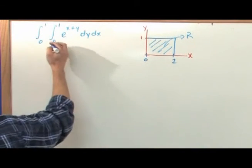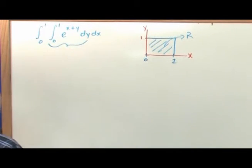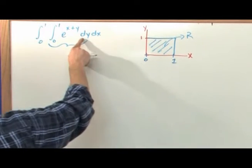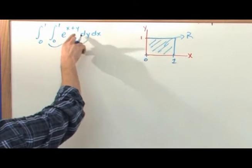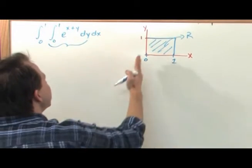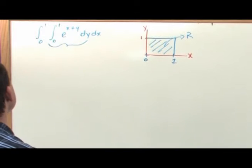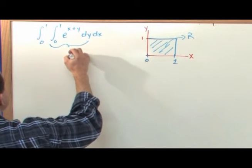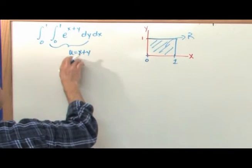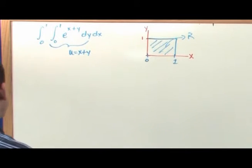So what do we do next? I'm going to work on the inner integral first, which is the integral from 0 to 1 of e^(x+y) dy. I'm only integrating along y. Now I don't like having x+y in the exponent, but since I'm integrating along y, x is a constant — it could be 2+y or 3+y. So I'm going to do a quick substitution: u = x+y, to get this in terms of e^u, something I know how to integrate.